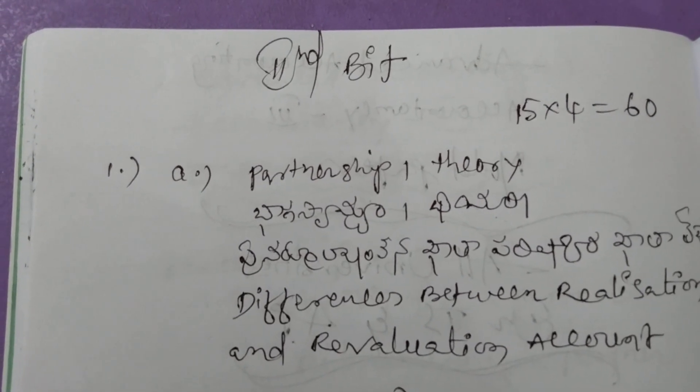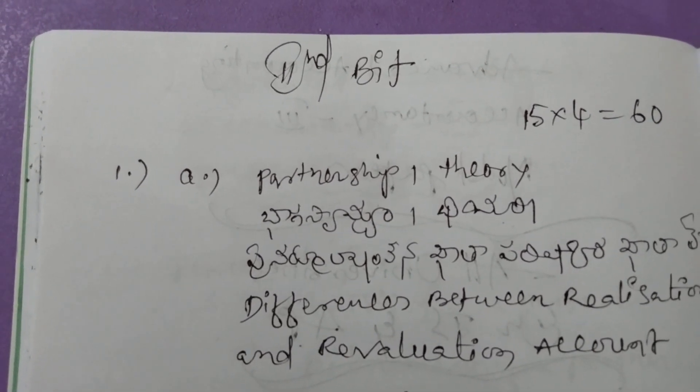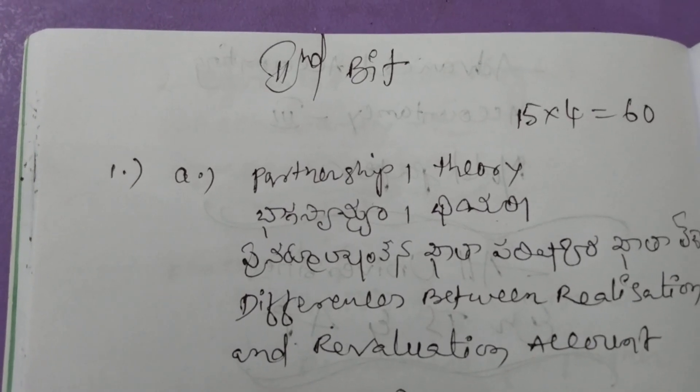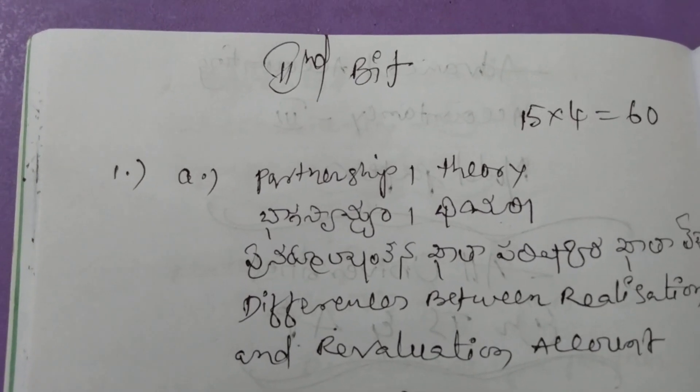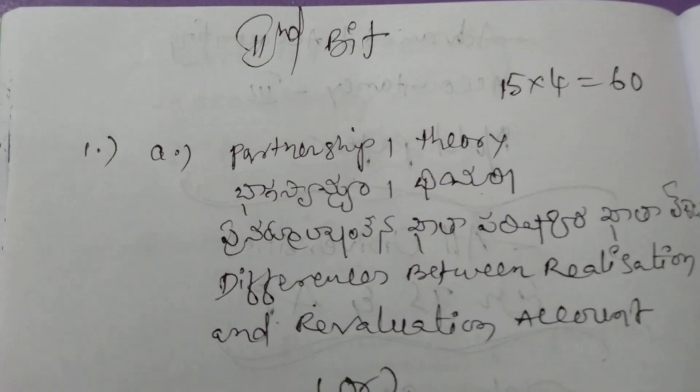Total 80 marks paper. In the exam, you need to answer 1 from 4, giving 15 marks each, totalling 60 marks.